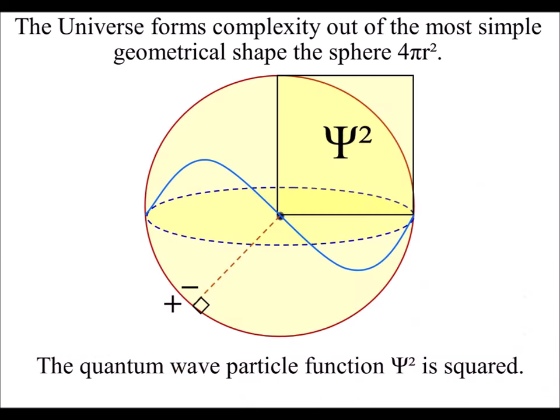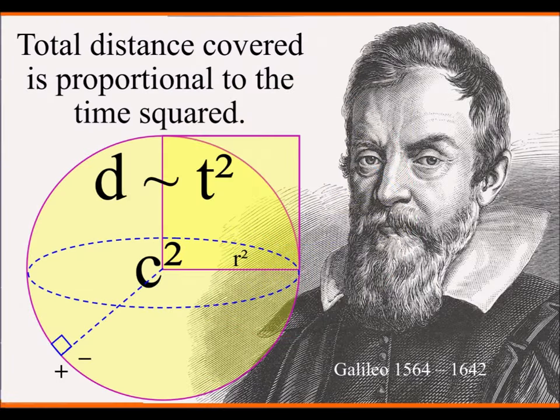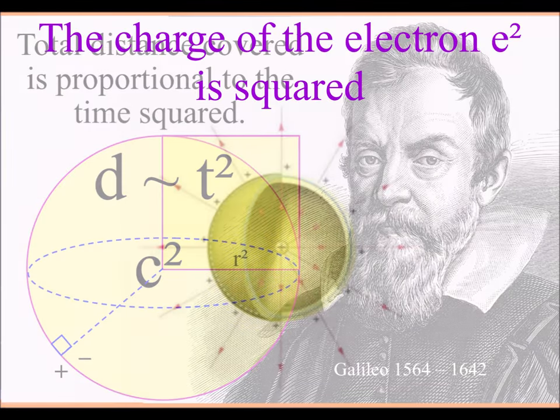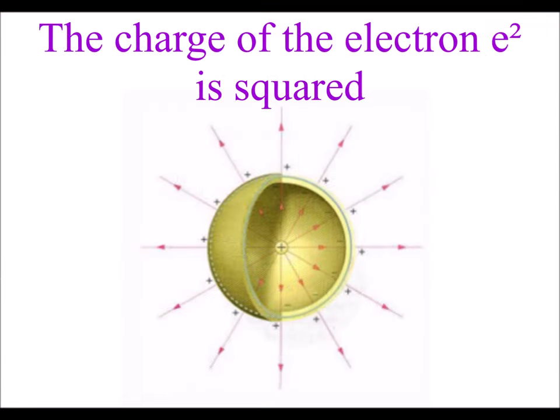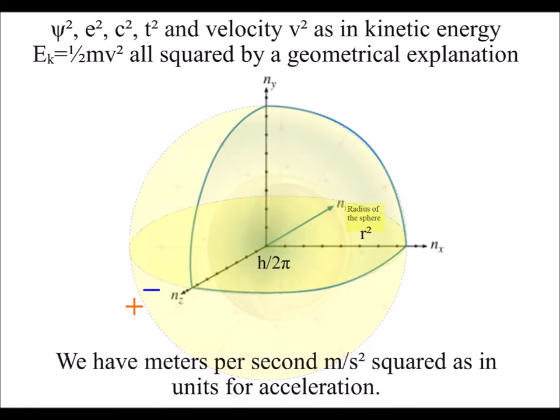We see the same dynamic geometry with the quantum wave particle function squared. Also, we have time squared, as in the work of Galileo, the charge of the electron squared, velocity squared, as in the equation for kinetic energy, and meters per second squared, as in units for acceleration.